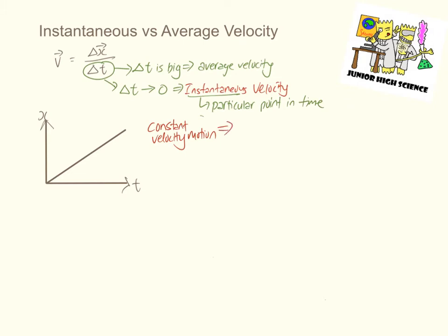Constant velocity motion, as the name implies, suggests that the velocity of the object is always the same. This means that the average velocity of the object would, therefore, be always equal to the instantaneous velocity of the object, which doesn't change.